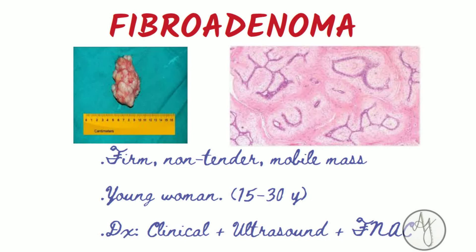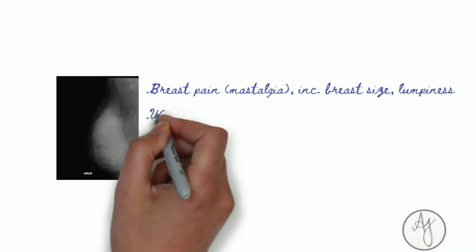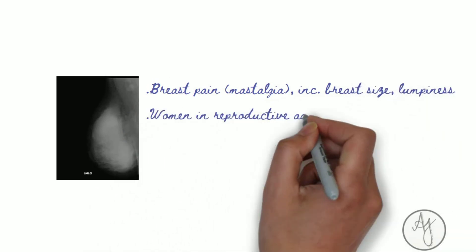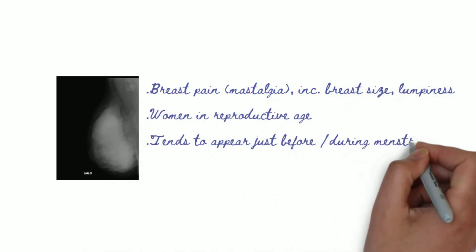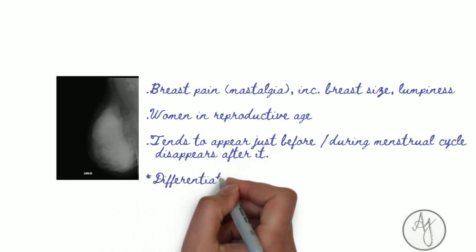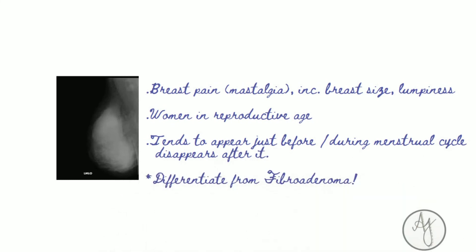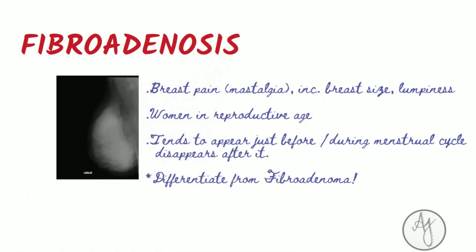If there is breast pain (mastalgia), increased breast size, and lumpiness of the breast in a female of reproductive age, which tends to appear just before or during the menstrual cycle and disappears after it, it is fibroadenosis. This is different from fibroadenoma.